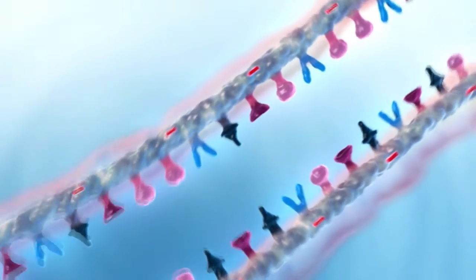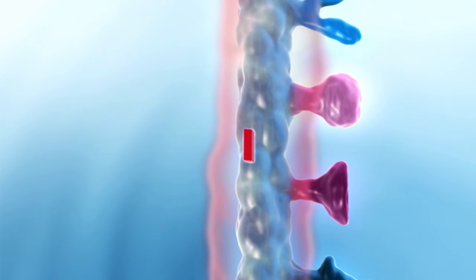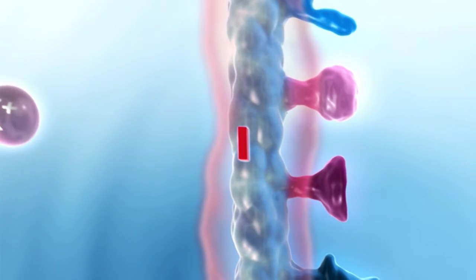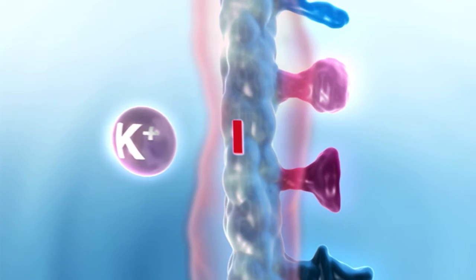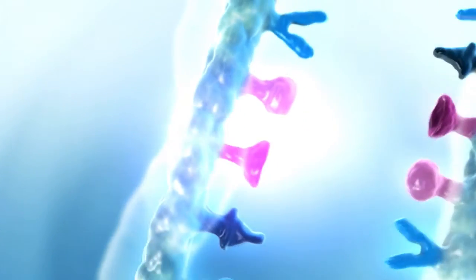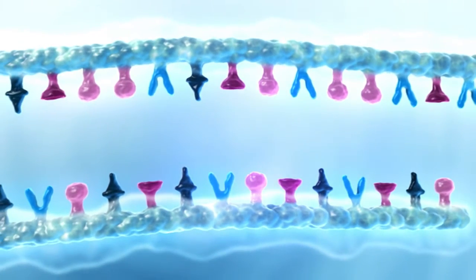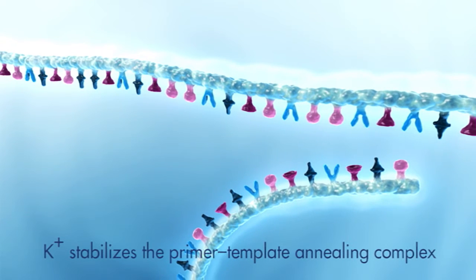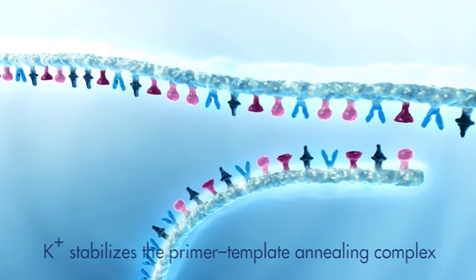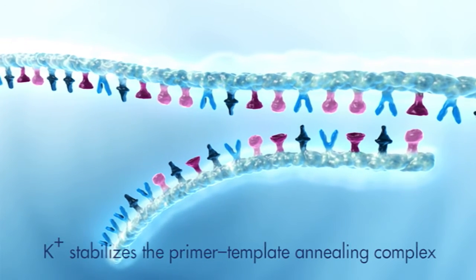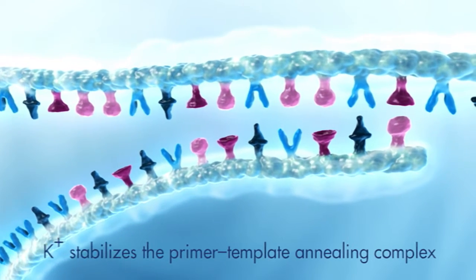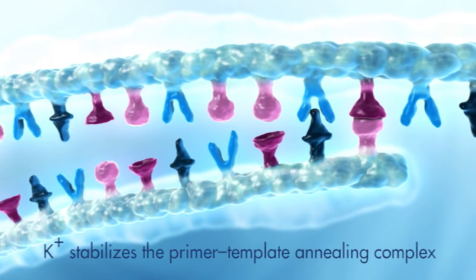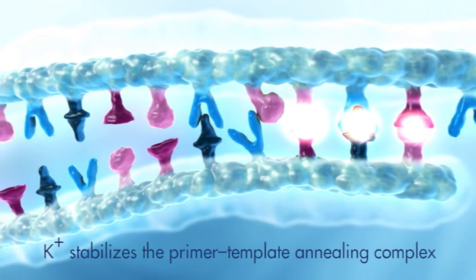How does the dual cationic formulation work? The positively charged K+ ion is attracted to the negatively charged phosphate groups of the DNA backbone of the template and primer. The charges are cancelled out. The K+ ion weakens the electro-repulsive forces between the DNA template and primer molecule. The push-off effect is overcome and the primer template annealing complexes are stabilized.